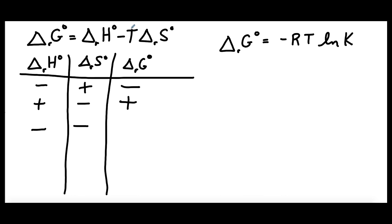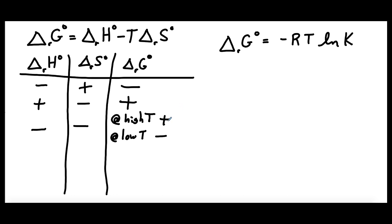If we have really high temperatures, that's going to make the entropy term dominate. The entropy term represents a decrease in entropy, and because of the negative sign in the equation, this overall term becomes positive, making delta G standard positive. So at high temperatures this reaction will have a positive delta G standard. We have a favorable enthalpy term and an unfavorable temperature-dependent entropy term — the entropy term dominates at high temperature. So at low temperature we have a negative delta G standard, meaning we go from a favorable reaction at low temperature to an unfavorable one at high temperature. This reaction has a crossover temperature where delta G standard switches from favorable to unfavorable.